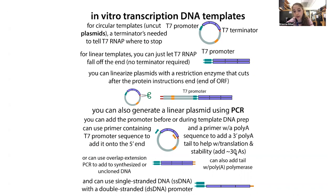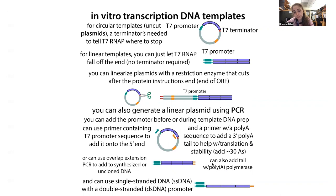You can also use overlap extension PCR to add to synthesized or uncloned DNA. You can buy synthesized DNA and use a primer with the promoter sequence, then use overlap PCR to get it added on. This lets you amplify it with PCR. There are different ways to get templates: you can have part of the primer overlap with one region and part with another, use those overlaps as start sites, and fill in the gaps to add sequences on.